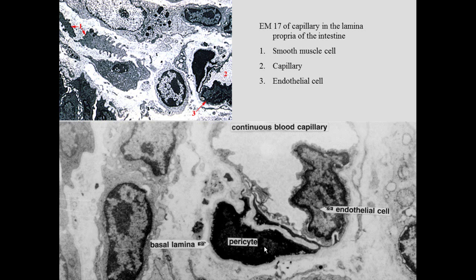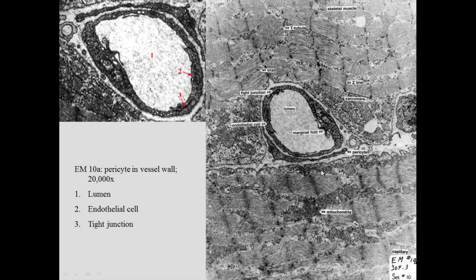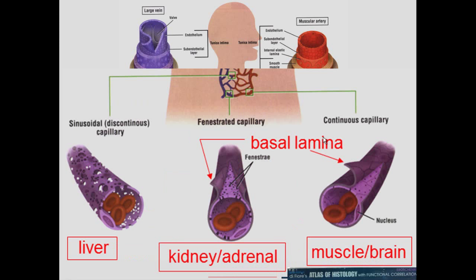We're not entirely sure what the pericyte does — maybe it moves along and cleans out the basal lamina. Here we see another capillary with endothelial cells, and you can see tight junctions between adjacent endothelial cells, as well as marginal folds — a fold that flaps over the junction to prevent rupture. Looking at three different types of capillaries, in muscle we have a continuous capillary.